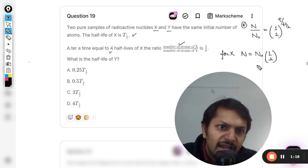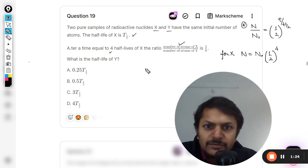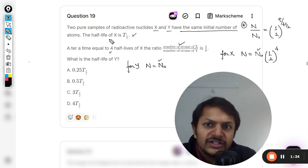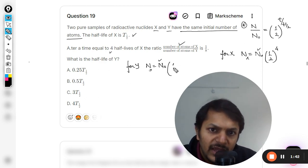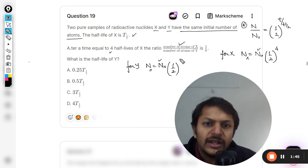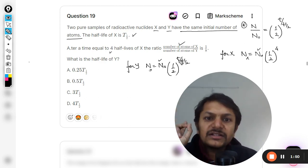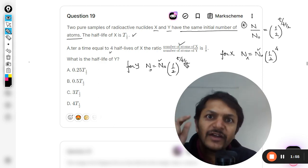So this is equal to N-naught times one-half, and for this half-life, four half-lives have been gone. So this is for X. But what about for Y? Like for Y, N is equal to N-naught, because you have started with the same number of nuclei. It is written here, same initial number of atoms. So N-naught will be having the same value here. I can write X here, I can write Y, but N-naught will be the same into one-half raised to the power, now for this I'm going to use t divided by t-half.